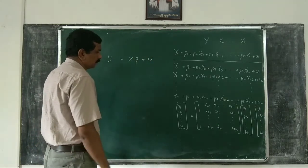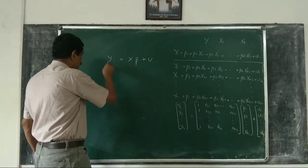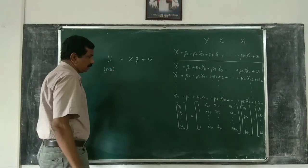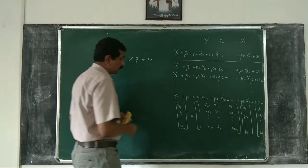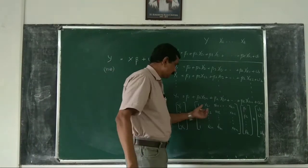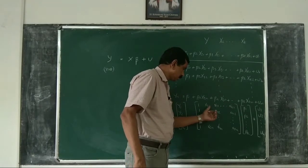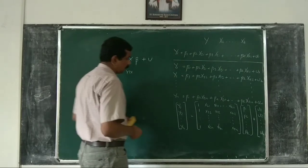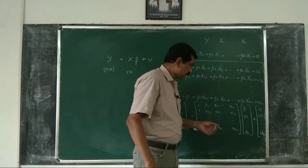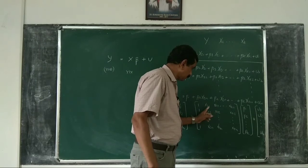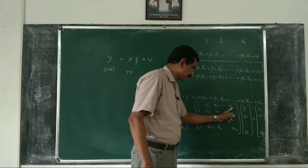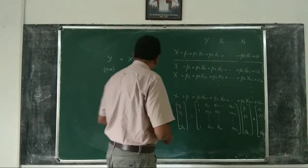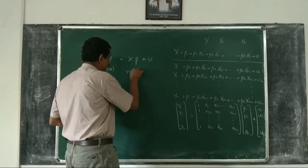Now let me write this as: the vector y equals X beta plus u. Y has the order n by 1. Now consider X — X has n rows and k columns (columns 2, 3, ..., k, that is k-1 independent variable columns plus a column of units), so X has order n by k.